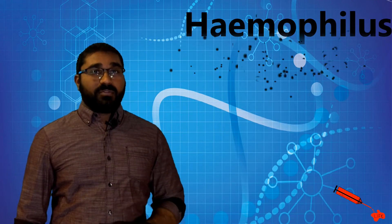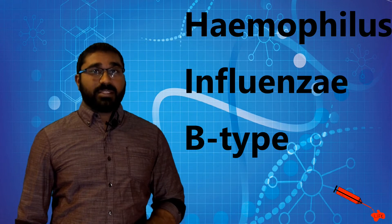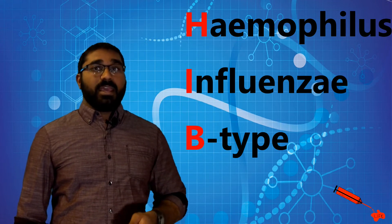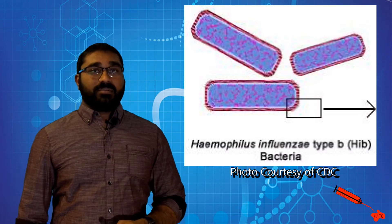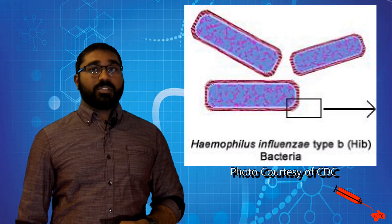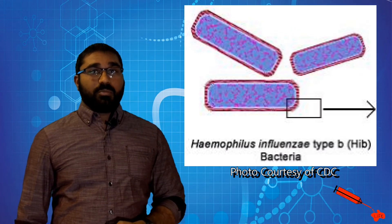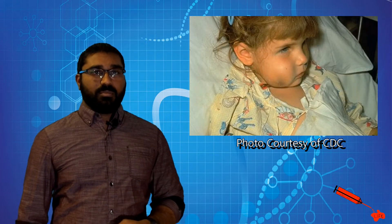This is exactly what happened with Haemophilus influenzae type B, or HIB for short. This bacteria would cause infection in both small children and adults, but the issue was that it was almost always fatal in the small children. But why? What could possibly cause this?